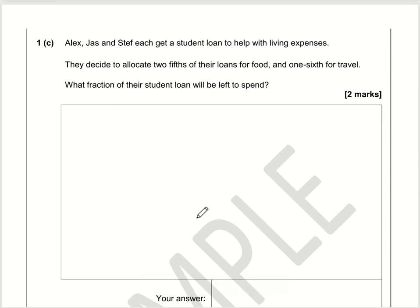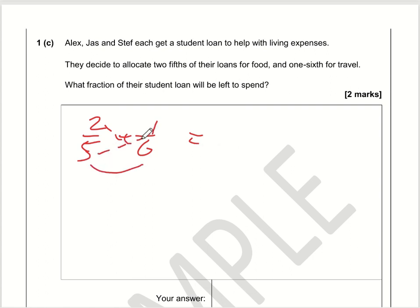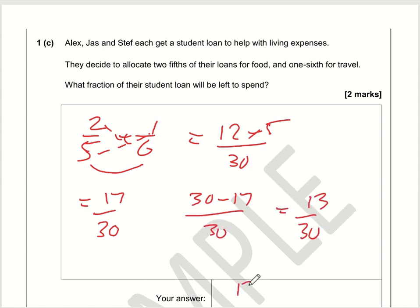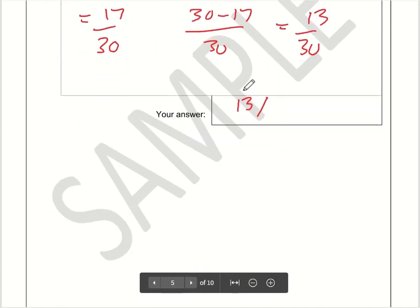For this question, it doesn't matter that there are three of them — whether it's one or three of them, it's still two fifths plus one sixth. I'm going to work out the fraction that is food and travel combined. Using cross multiplication: 2 times 6 is 12, plus 1 times 5 is 5, over 5 times 6 which is 30. So 12 plus 5 is 17 over 30. They've spent 17 thirtieths on food and travel combined, so the rest is 30 minus 17 over 30, which is 13 over 30.